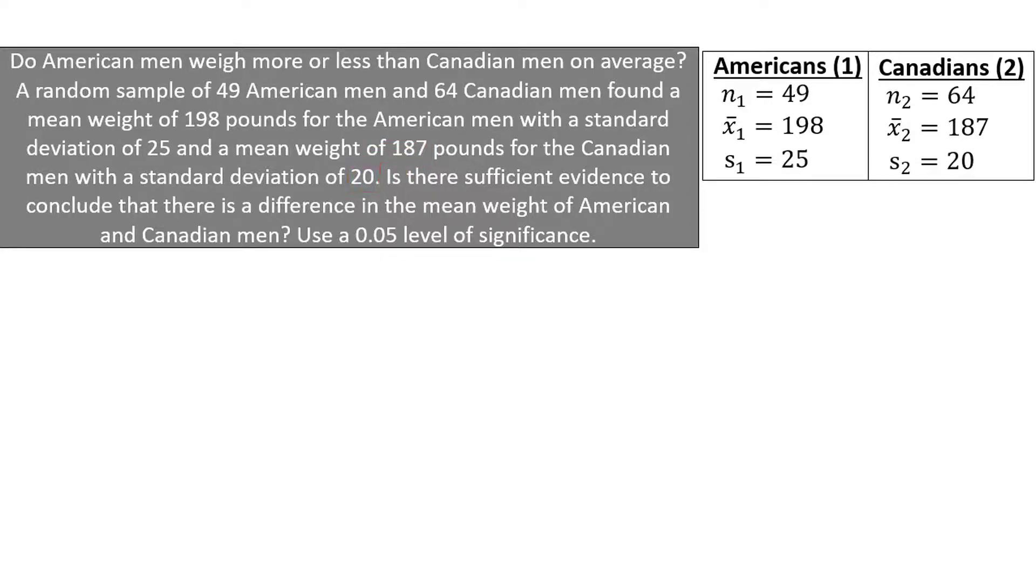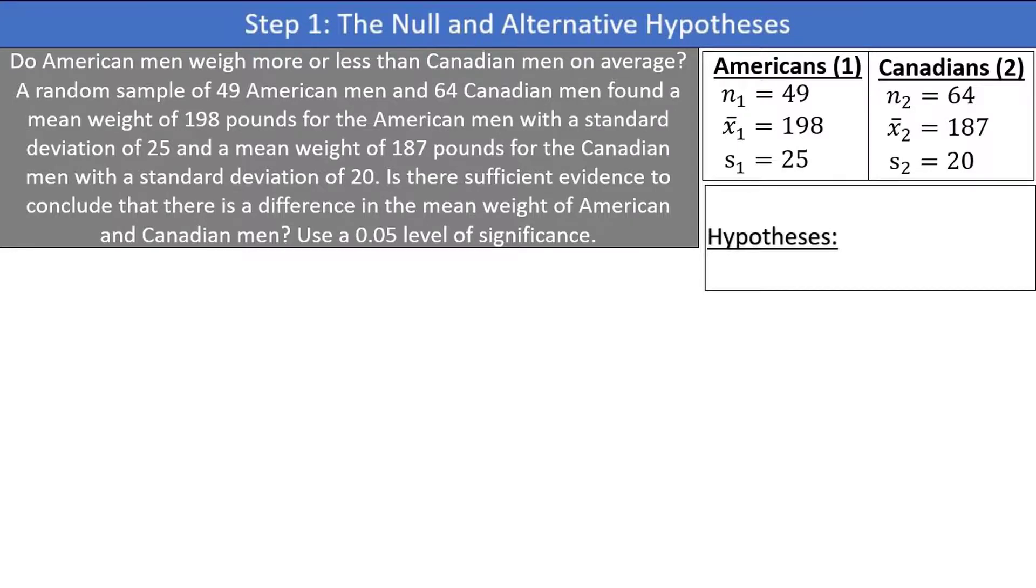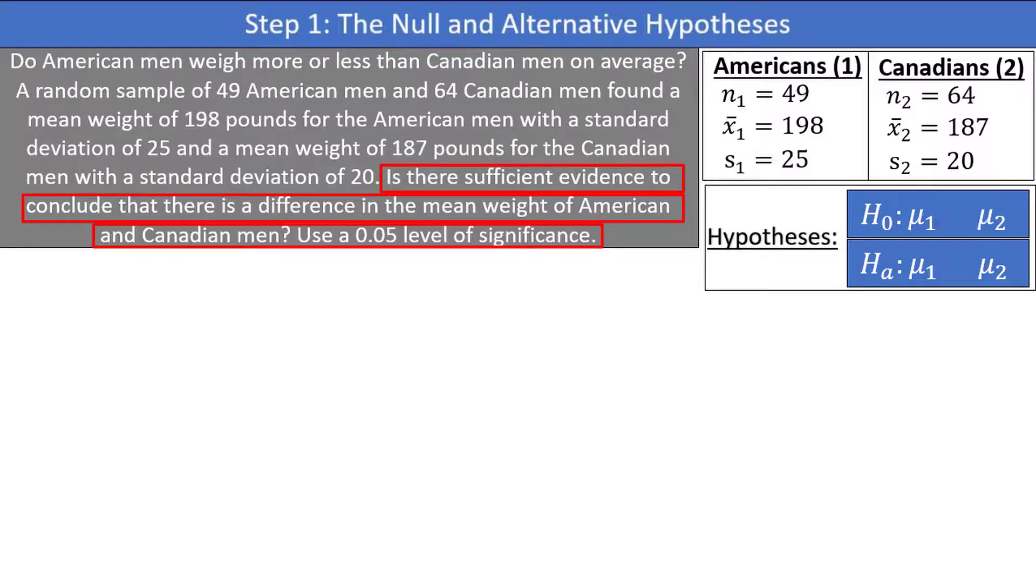Next we can move on to setting up the null and alternative hypotheses. For the difference of two independent population means, the null and alternative hypotheses contain mu1 and mu2 with some symbol in the middle, which we will determine based on the wording in the problem. If we reread the given information, we see the research question is whether or not there is a difference in the mean weight of American and Canadian men. Nowhere in the given information is there a suggestion that the mean of one population is greater or less than the other. So therefore we have a two-tailed test, meaning we need to have not equal to in the alternative hypothesis and equal to in the null hypothesis.